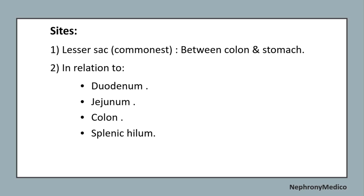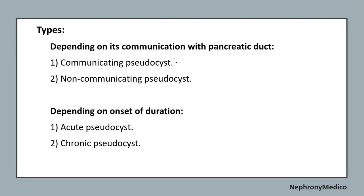Sites include the lesser sac, which is the most common site, between the colon and stomach. It may also be present in relation to the duodenum, jejunum, colon, and splenic hilum. Types include, depending on communication with the pancreatic duct: communicating pseudocyst and non-communicating pseudocyst. Depending on duration of onset: acute pseudocyst and chronic pseudocyst.